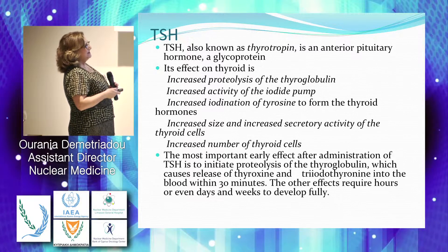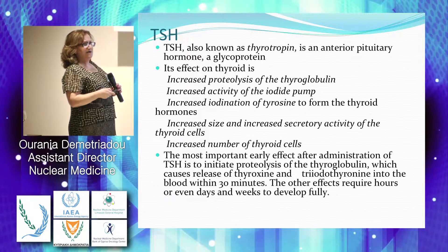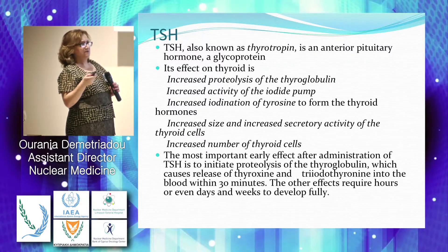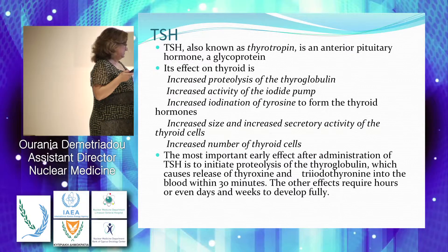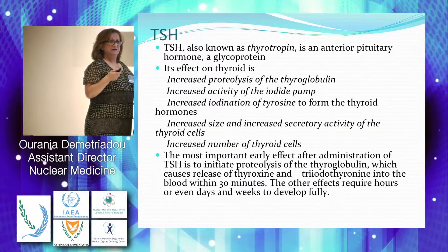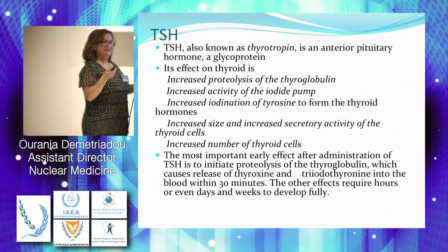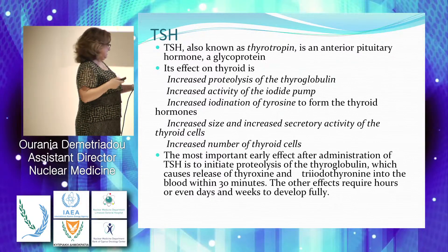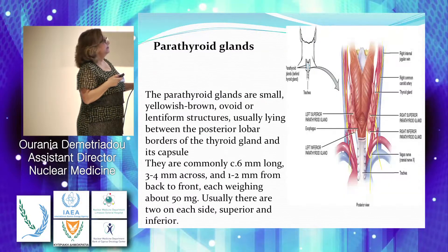TSH increases the size and secretory activity of thyroid cells and increases the number of thyroid cells. Before, when there was a multinodular goiter, thyroxine was given in order to decrease the size of the nodules, and this is actually driven by this effect of TSH on the thyroid gland.